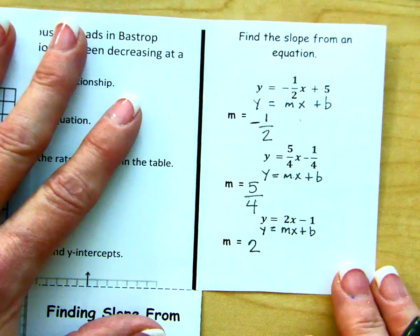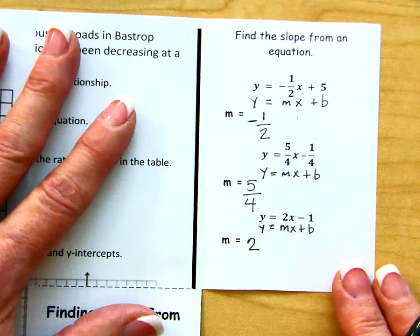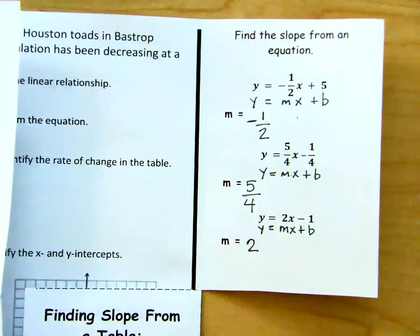So in order to find the slope from an equation, you first must write it into slope-intercept form or solve it for y, and then identify the coefficient of the x term.